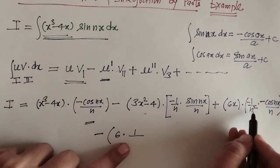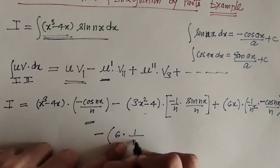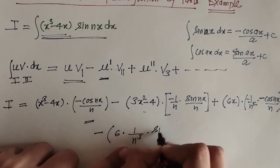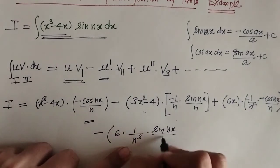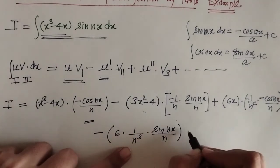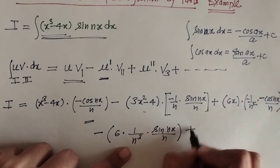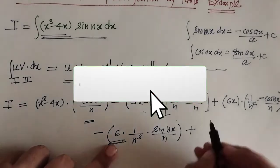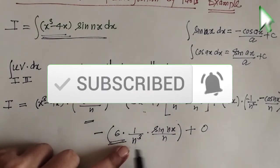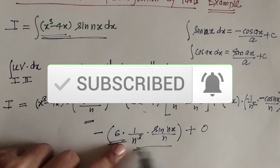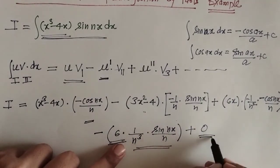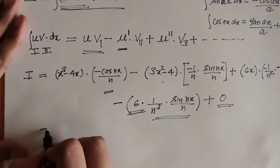So here we have (1/n²) times n, giving 1/n³, and the cosine integral is sin(nx) upon n. The next term after that: the derivative of 6 is 0, and 0 times the integral gives 0, so the series terminates.